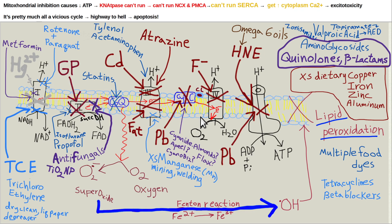You're always going to hear 'this only inhibits mitochondria a little bit' — but these things add up. For example, today I was talking to a lady taking metformin for her diabetes. The treatment for diabetes actually inhibits mitochondrial electron transport, which is what causes diabetes. I wouldn't take it.